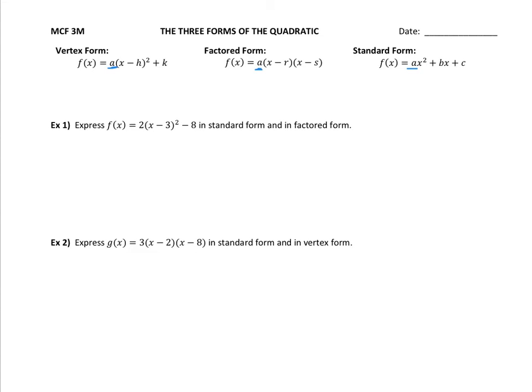A tells you your direction and your width of opening. A positive opens up, it's happy. A is negative, it's a frown, it's opening down. The farther the value of A is from 1, the skinnier the parabola is. The closer the A value is to 0, the wider that parabola will open.